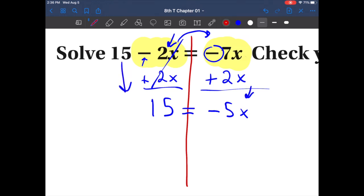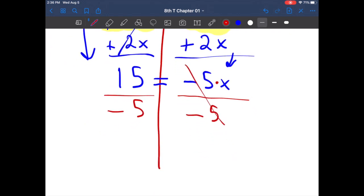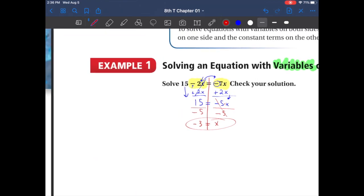Let's get that x all by itself. What invisible operation is in between that 5 and x? Well it's multiplication. So the opposite of multiplying by negative 5 is to divide by negative 5. Let's divide by negative 5 on this side. A negative divided by a negative is a positive, so the answer is negative 3 equals x.